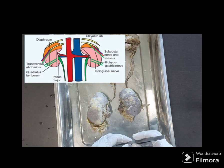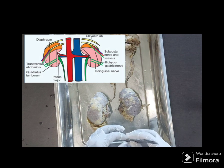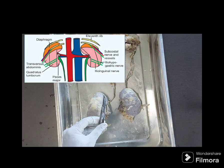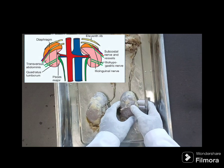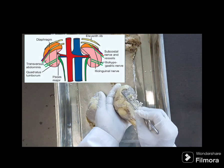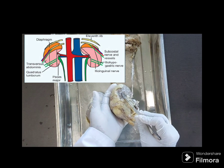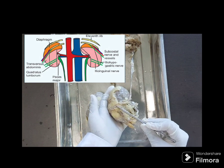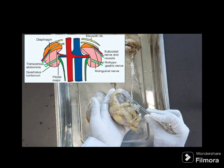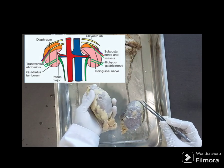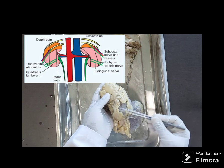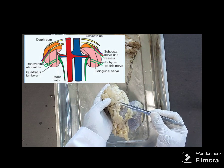Posteriorly, the kidneys are related to the ribs and the diaphragm. The right kidney lies a little lower, so it is related only to the 12th rib, and above that is the diaphragm. Below the diaphragm area we have the muscle quadratus lumborum, and three nerves are related: the subcostal vessels and nerves, then the iliohypogastric, and the ilioinguinal. On the left side the kidney lies at a higher level, so both the 11th and 12th ribs are related. The rest of the posterior relations are the same.